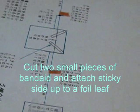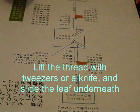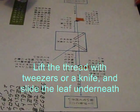Cut two small pieces of band-aid and attach sticky side up. Lift the thread with the tweezers or a knife and slide the leaf underneath.